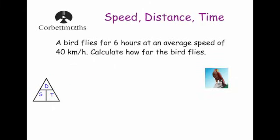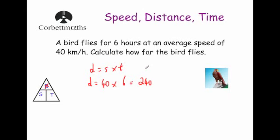A bird flies for 6 hours at an average speed of 40 kilometers per hour — calculate how far the bird flies. We want distance, so distance = speed × time = 40 × 6 = 240. The speed is in kilometers per hour, so the answer is 240 kilometers.